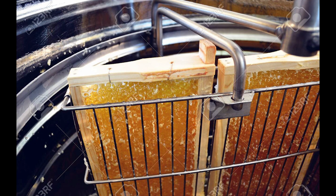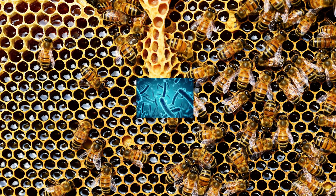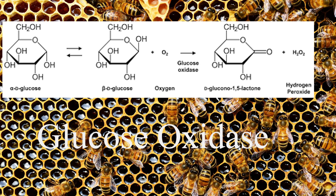Honeybees suppress the growth of bacteria. When they regurgitate — which is not vomit — they mix the nectar with an enzyme called glucose oxidase. This creates two byproducts: gluconic acid and hydrogen peroxide. This helps in suppressing bacterial growth.